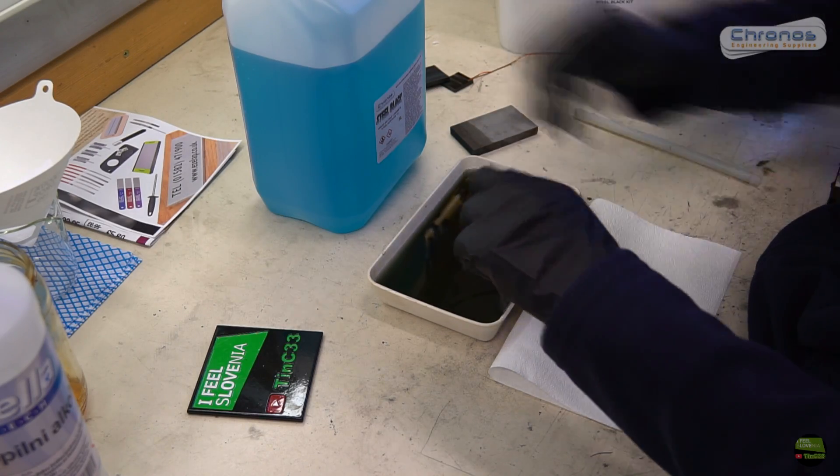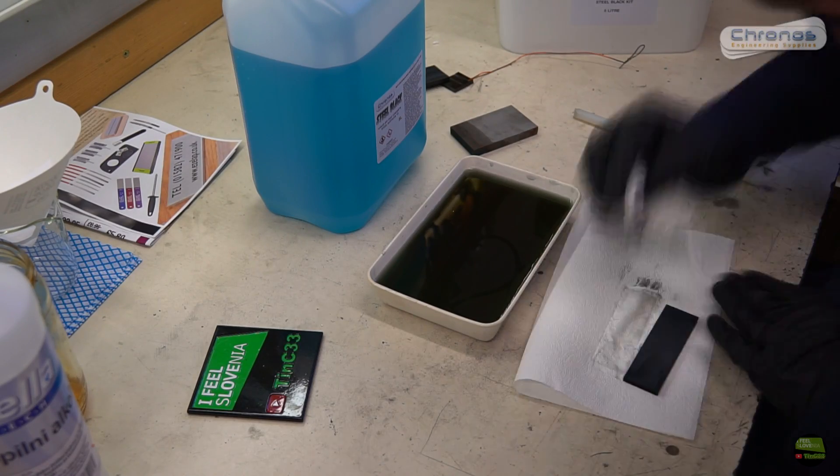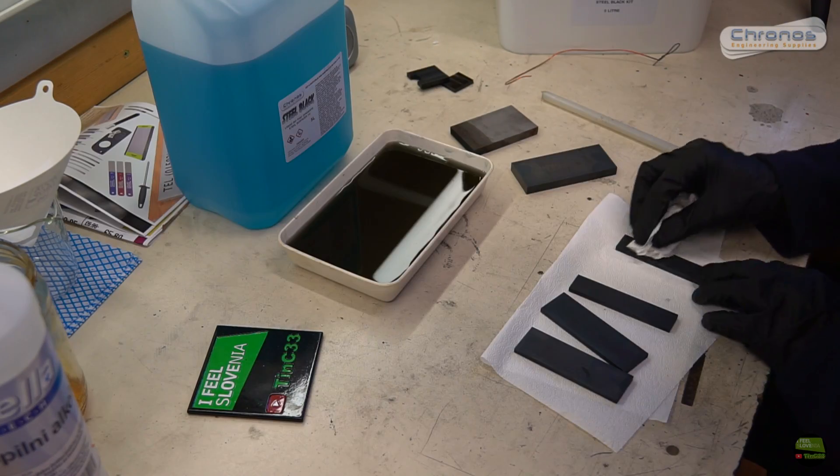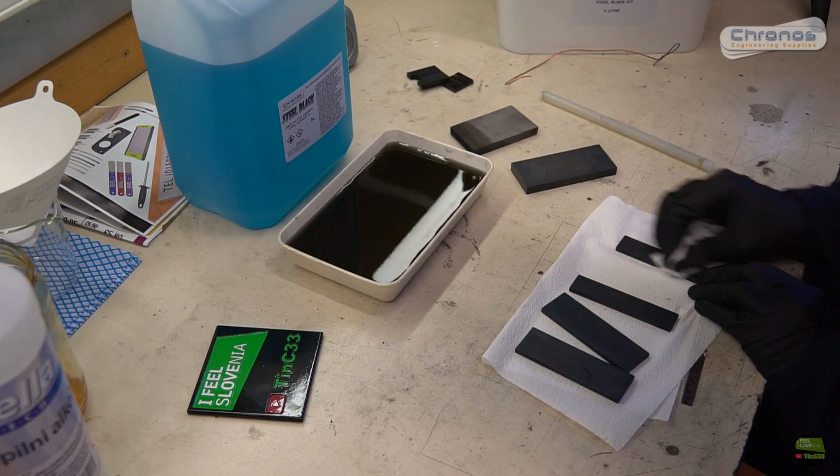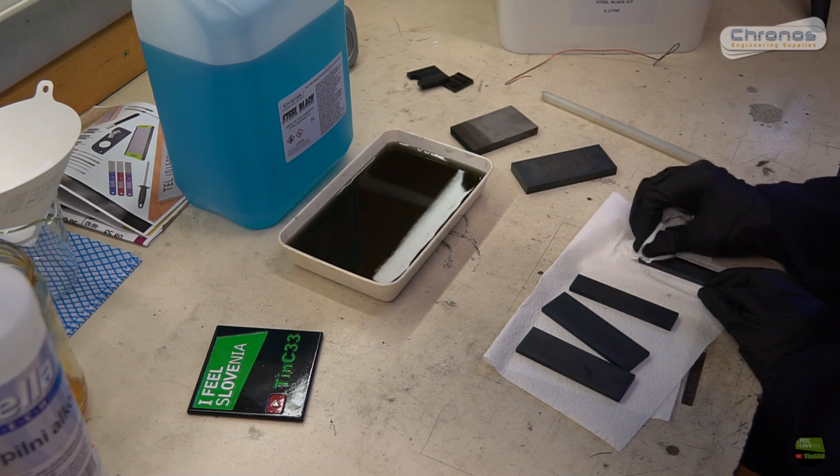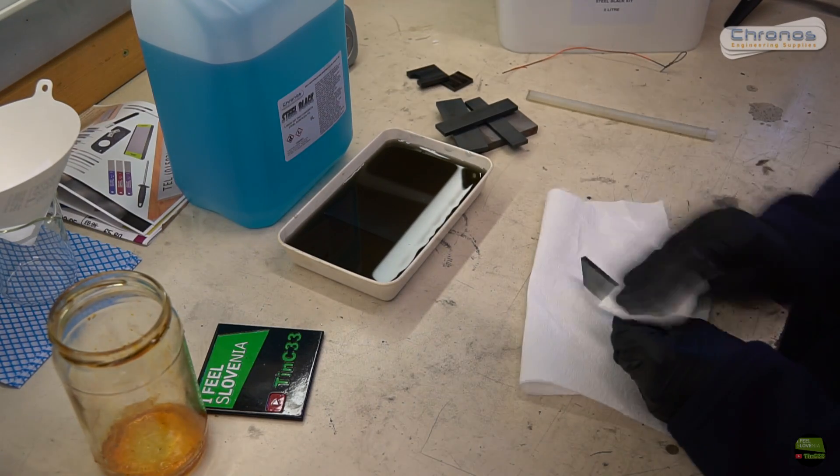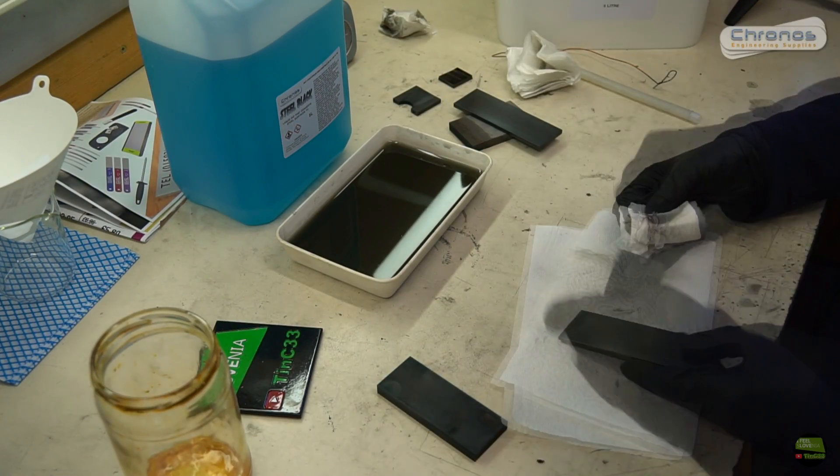After about 20 minutes the solution becomes completely black. So I take pieces out and wipe them. Firstly I wipe them just to dry, and then wipe again more hard to get off all the excess black. And of course for the end coat the pieces with oil and wipe them again, so you got a nice smooth and dry surface.